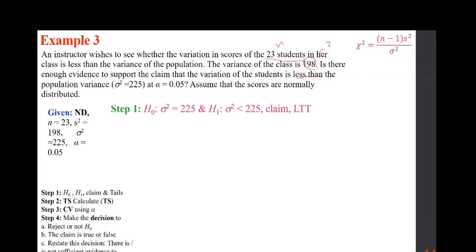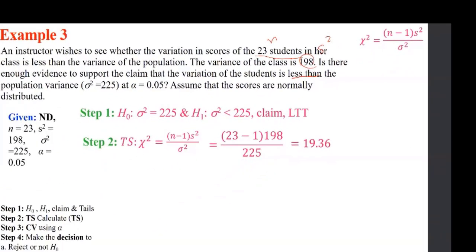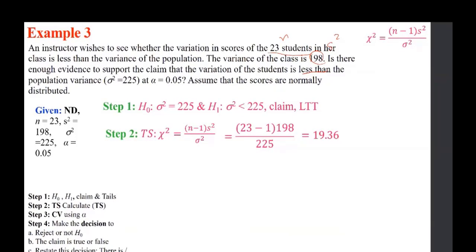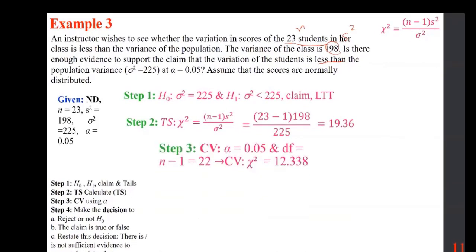Use the formula to find the test statistic. Everything is given: n, s squared, and sigma squared. Most of the time s and sigma are given, so you square them. Calculate by plugging in the values. The next step is to find the critical value from alpha = 0.05. Degrees of freedom is n minus 1, which is 22. Use the table — and the previous page already had the numbers under df = 22.